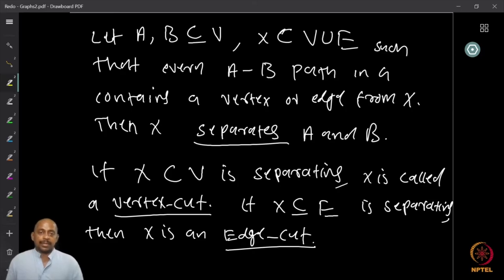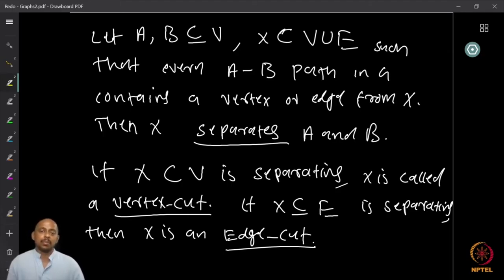A couple more definitions: if A and B are subsets of the vertex set V, and X is a subset of the vertex set union edge set, and every A-B path in the graph G contains a vertex or edge from the set X, then if I remove X, A and B become disconnected. We call X a separating set — X separates A and B — if every A-B path in G contains a vertex or edge from X.